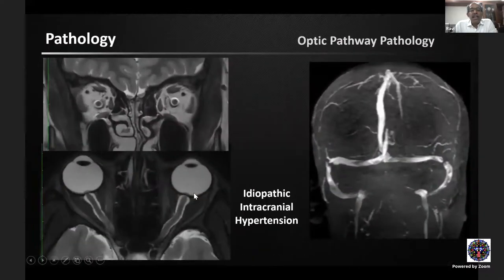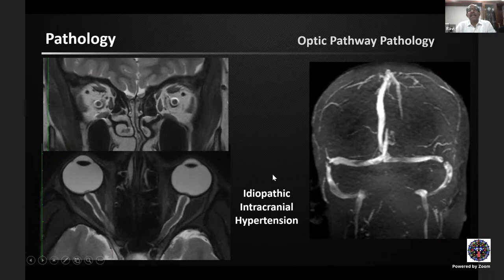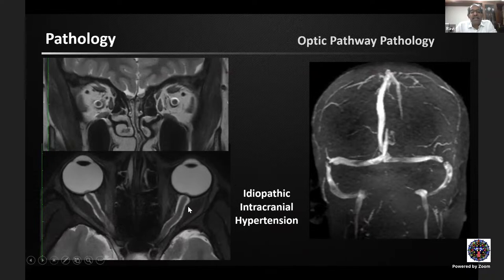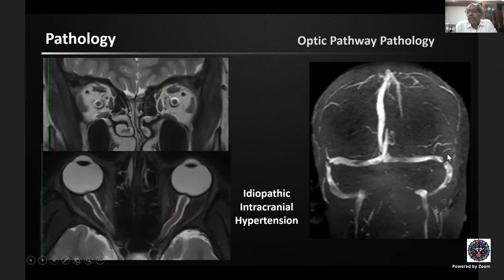For optic pathway pathology, idiopathic intracranial hypertension (IIH) is a common imaging indication. MRI now demonstrates cardinal signs of raised ICP: protrusion of the optic papillae, optic nerve tortuosity, increased perioptic CSF on axial and coronal images, and posterior scleral flattening. Importantly, MR venography is always performed to rule out cerebral venous sinus thrombosis, a silent but eminently treatable condition. The typical finding in IIH is narrowing at the transverse-sigmoid sinus junctions bilaterally.